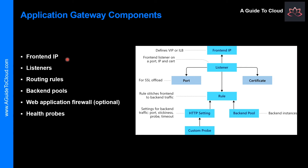The first component is the Frontend IP Address. Client requests are received through the Frontend IP Address. You can configure Application Gateway to have a public IP address, a private IP address, or both. Application Gateway cannot have more than one public or one private IP address.